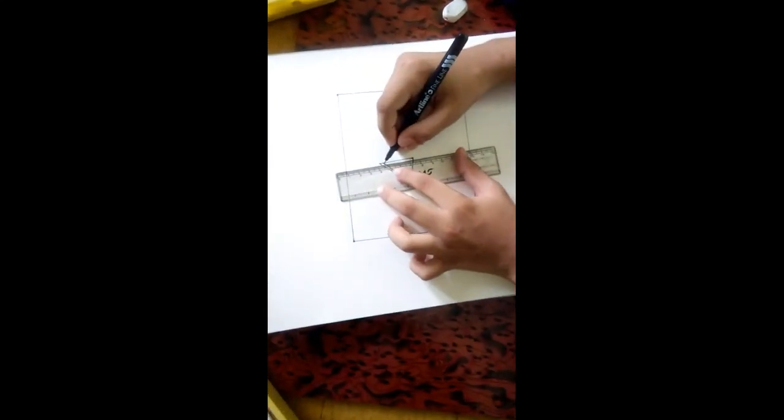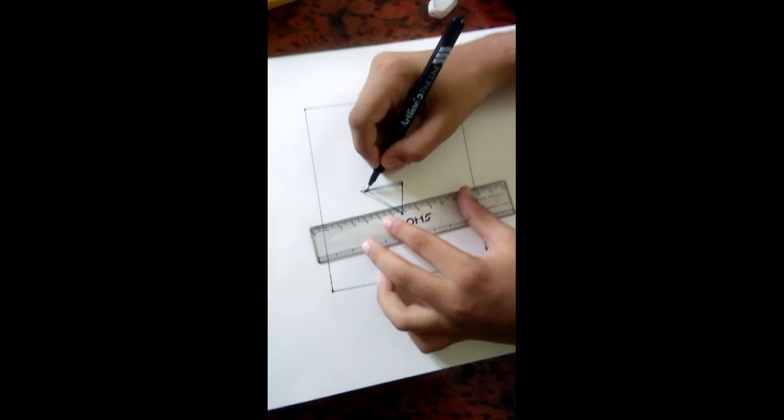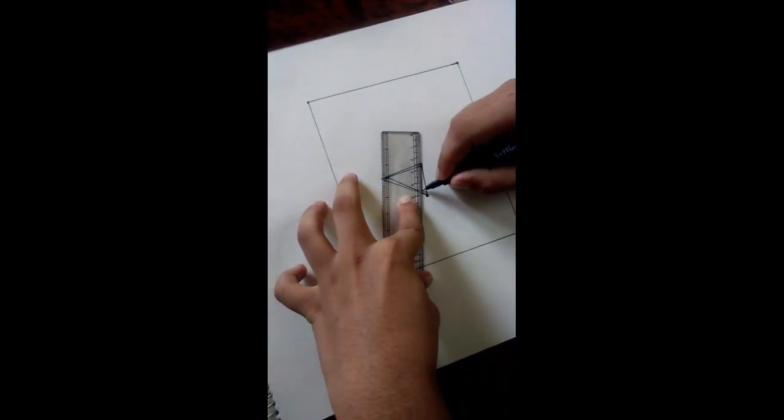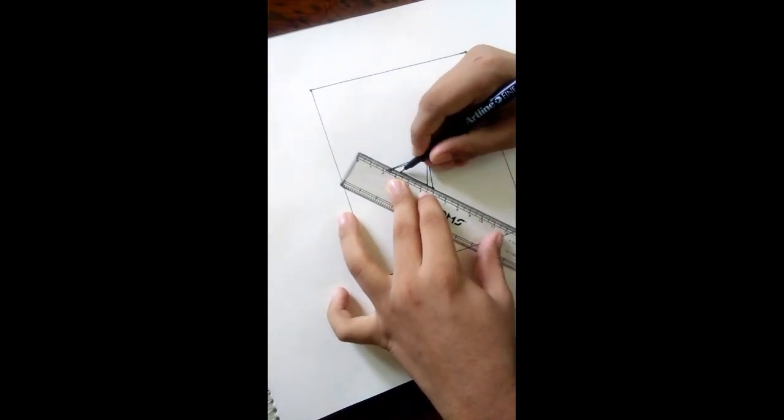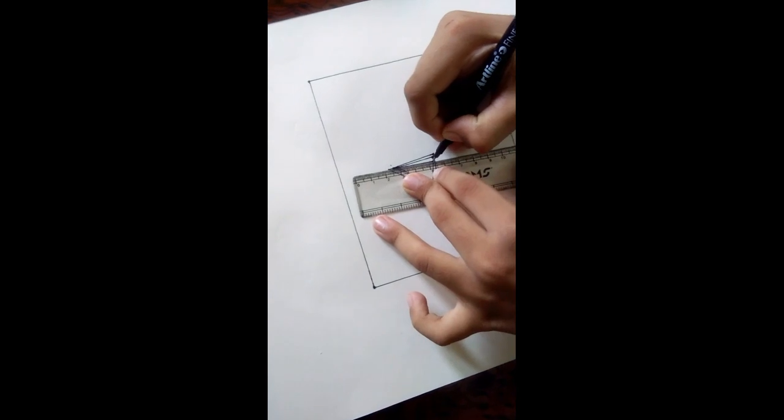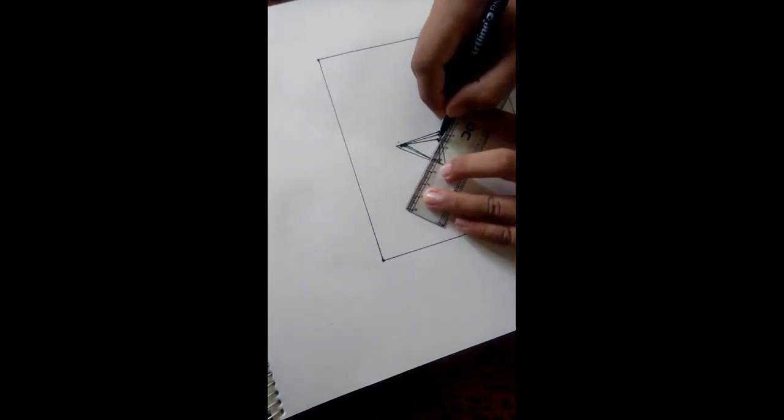And like that. Here also. From this point. And again from here. You have to do this method fully till the triangle is covered with these lines.